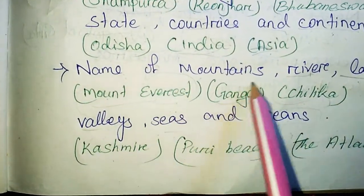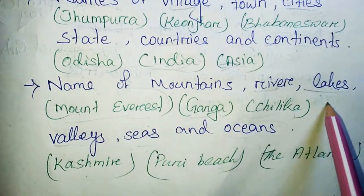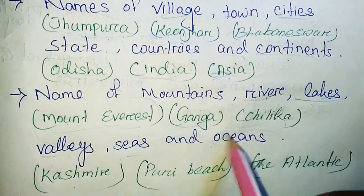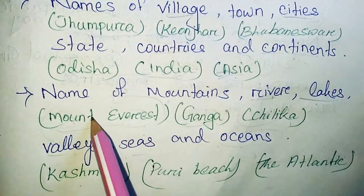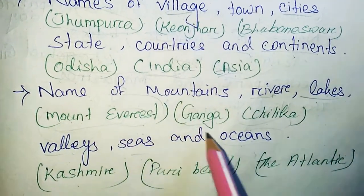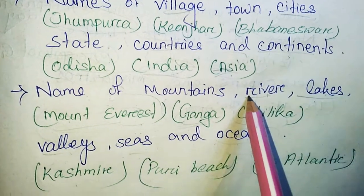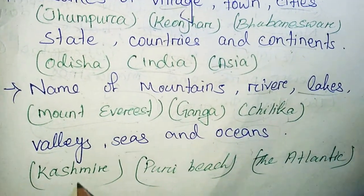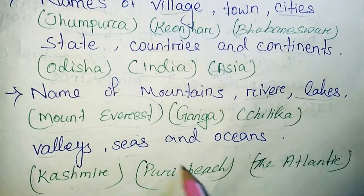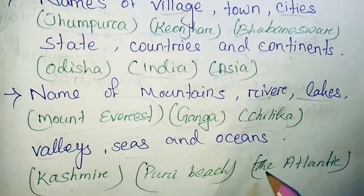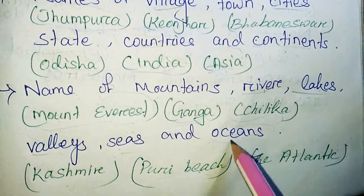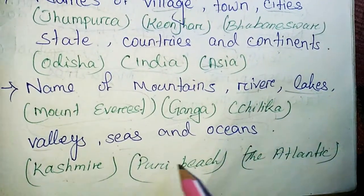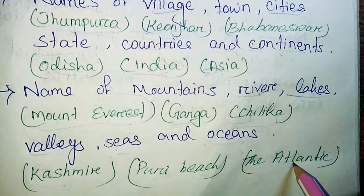Then the names of mountains, rivers, lakes, valleys, seas, and oceans. Mount Everest is an example of mountain. Ganga is an example of river. Chilika is an example of lake. Kashmir is an example of valley. Puri Vish is an example of sea. The Antarctic is an example of ocean. Here Mount Everest, Ganga, Chilika, Kashmir, Puri Vish, the Antarctic — these are the names, and these are all proper nouns.